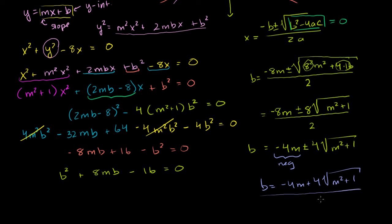I'll leave you there for this video. In the next video, we're going to do the exact same thing for the hyperbola, realizing that the line will only intersect it at one point. Since it's the same line, we know their b's have to be the same, so we'll get b as some other function of m. Then we can set the two expressions equal to each other and solve for m, and once we have m, we also have b, giving us our line.